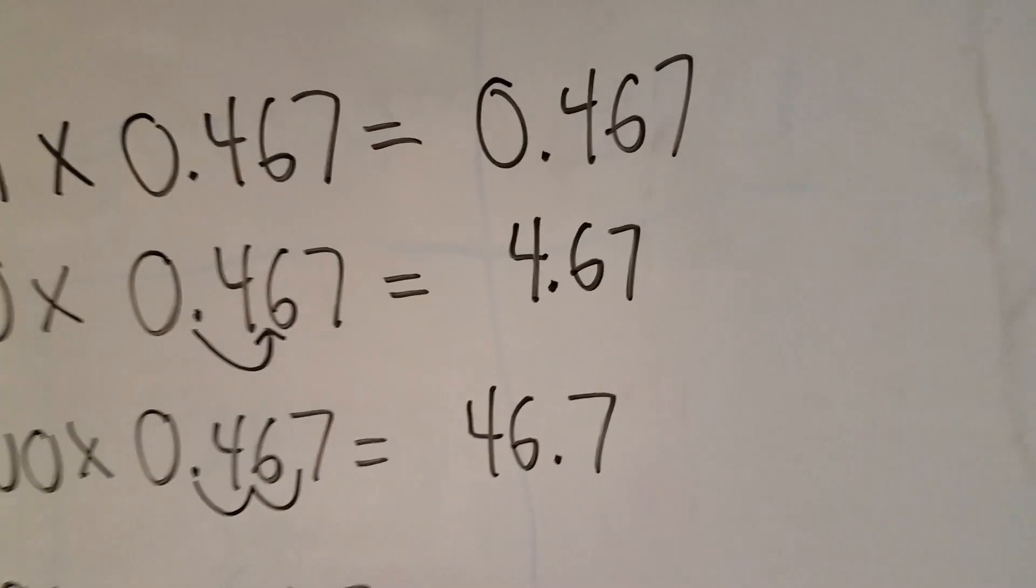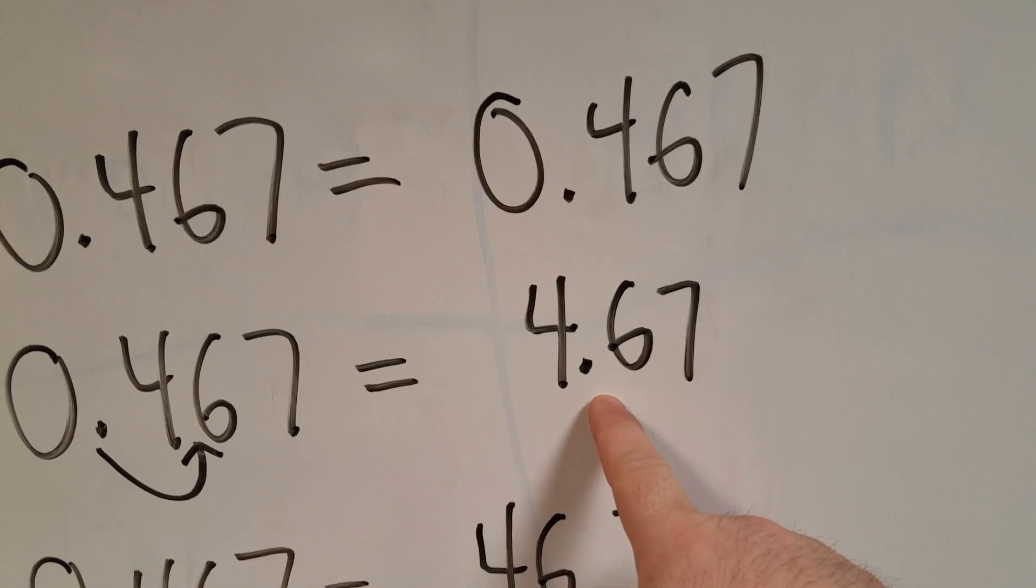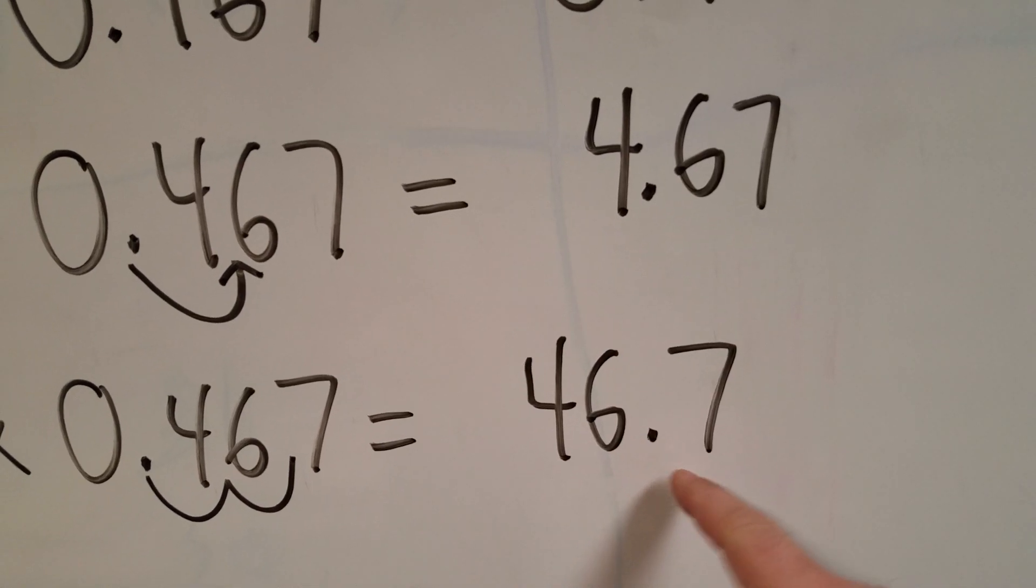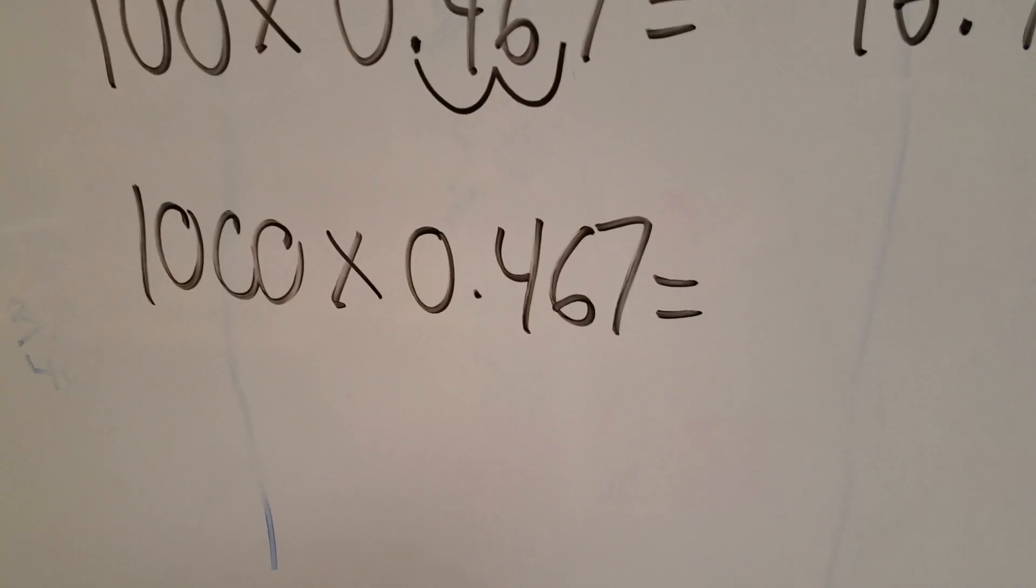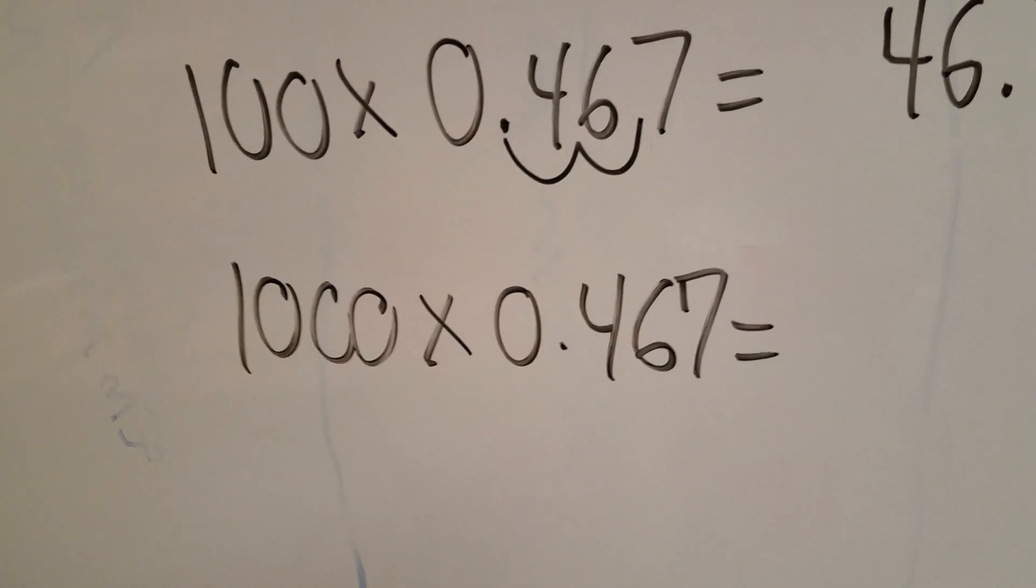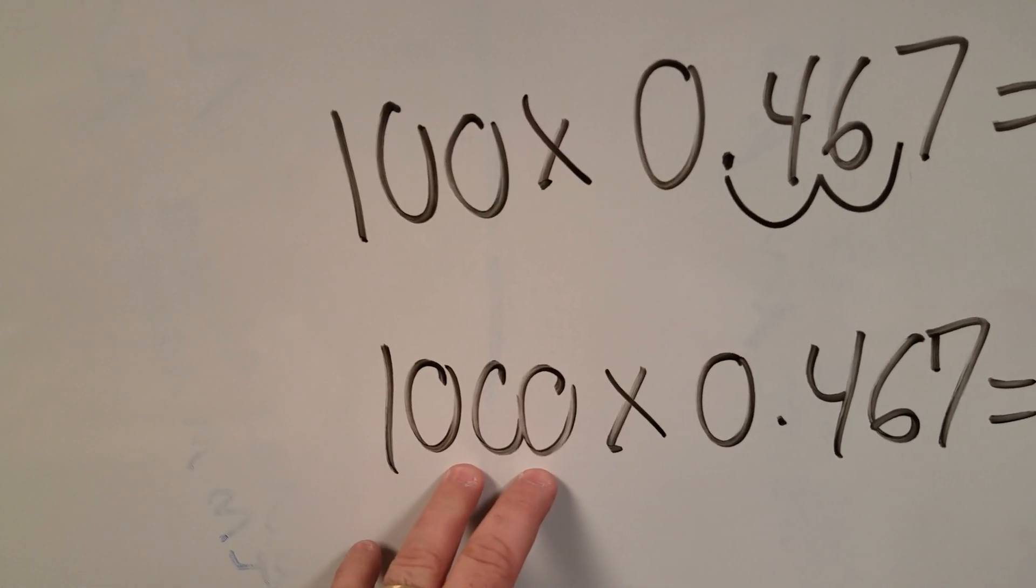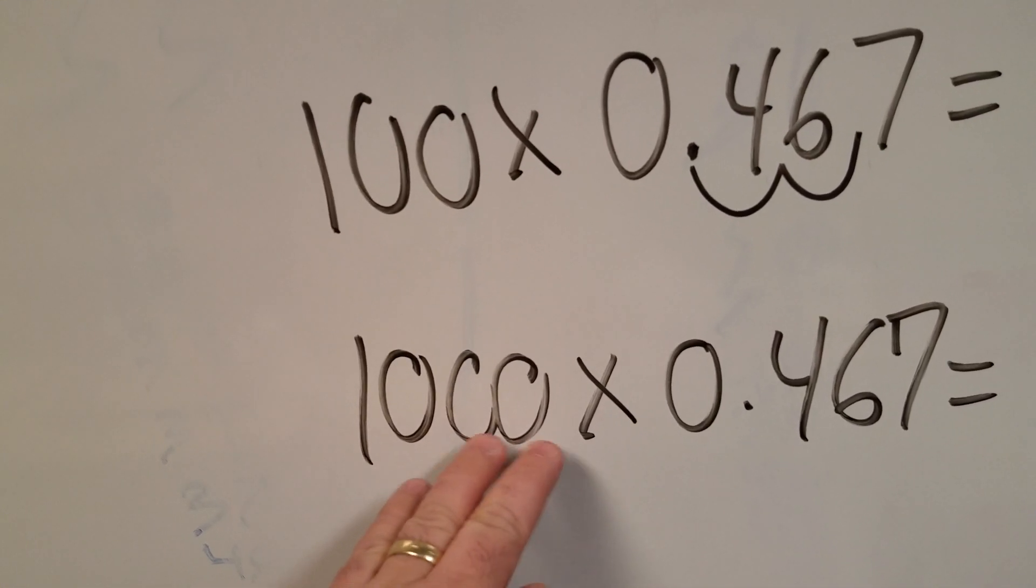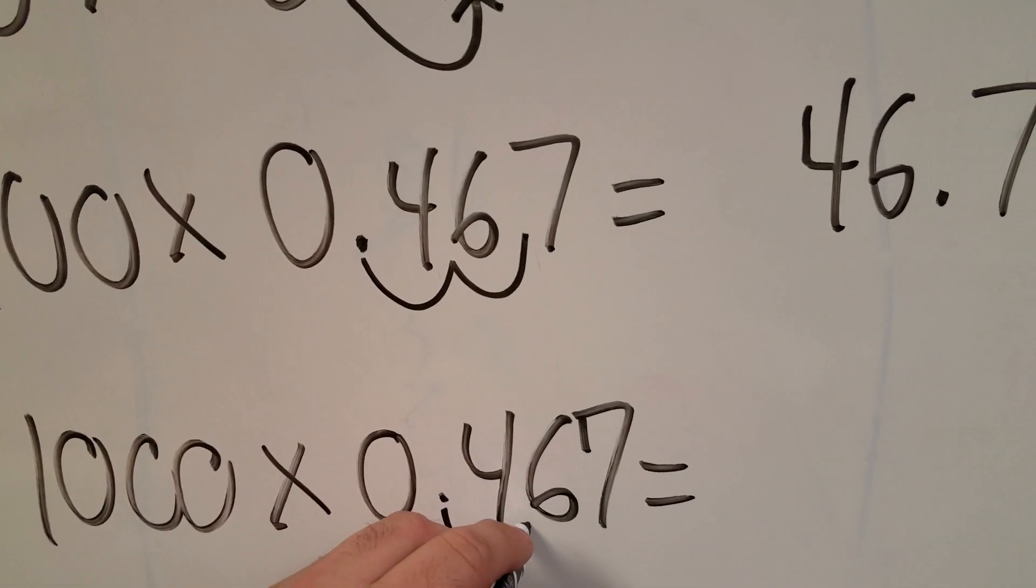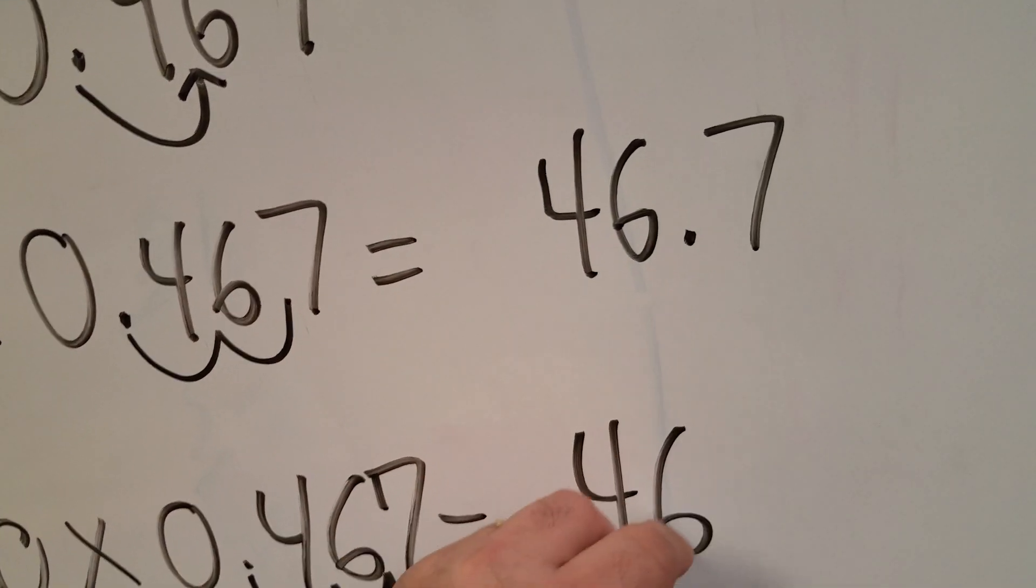And you can see the decimal was before the 4. 1 power of 10, it's after the 4. 2 powers of 10, it's 2 places after. So let's see, our actual problem is 1,000 times 467 thousandths. So that's 3 powers of 10. 10 times 10 times 10 is 1,000. 3 powers of 10 means I'm going to move this decimal 3 places. And that gives me 467.